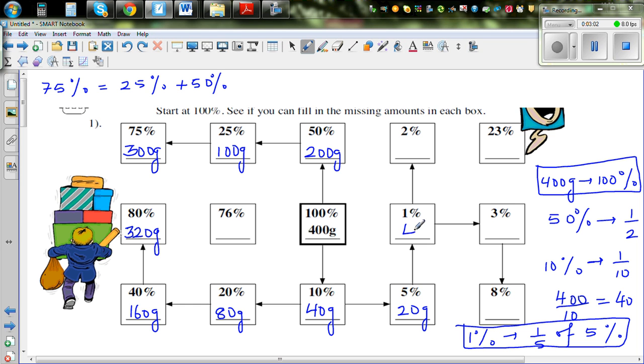20 divided by 5 is 4. Or from here you can think in a different way: 1% is 1 hundredth of 100%, so if you divide this by 100 you get 4 grams. From 1% you can find 3%, so that is times 3, which is 12 grams.